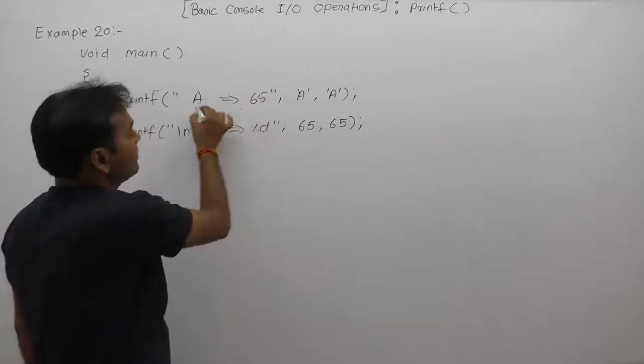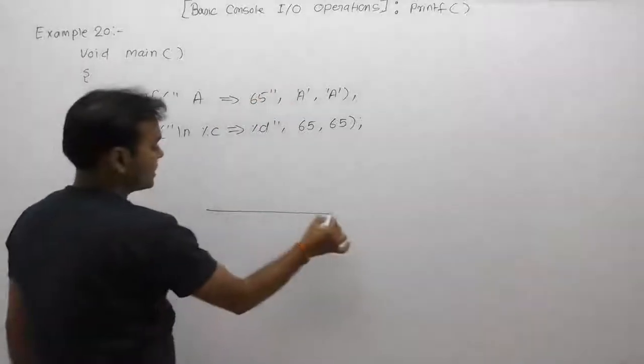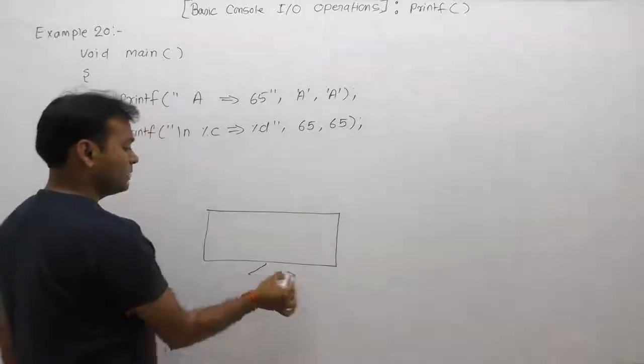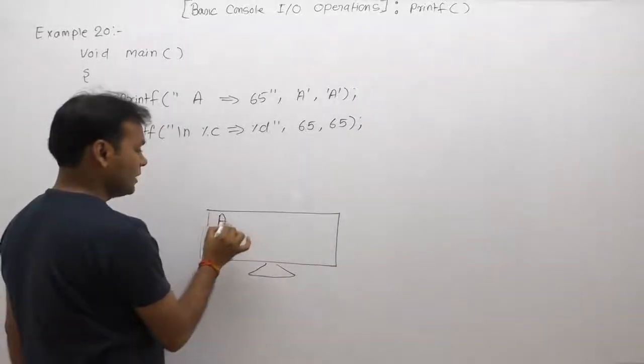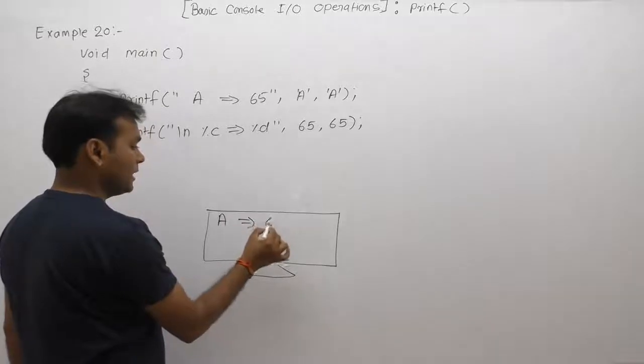Therefore, the final message becomes 'a arrow 65'. Therefore, the final output of that first printf is 'a as 65'.